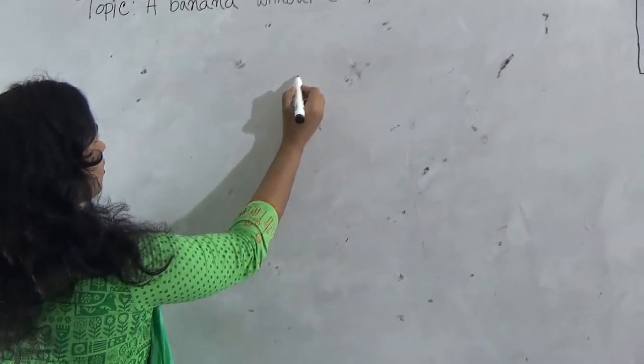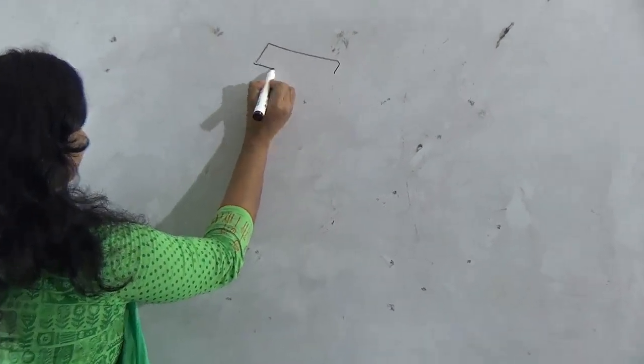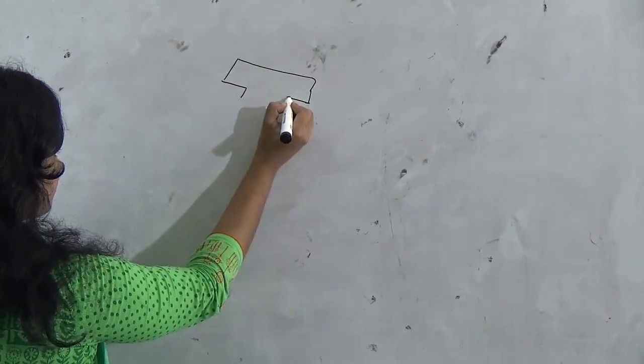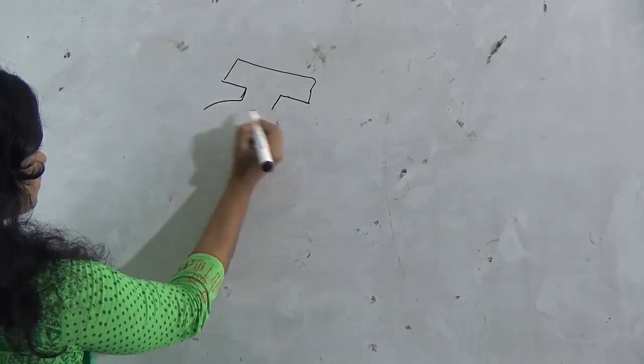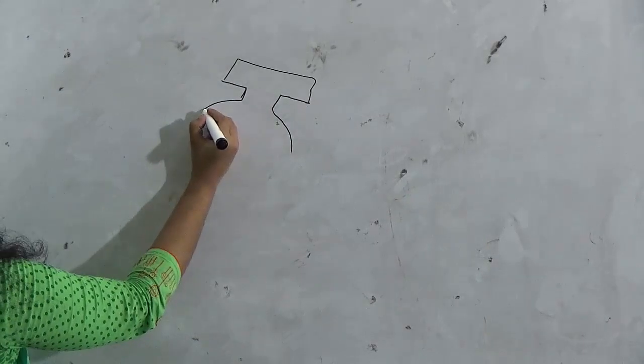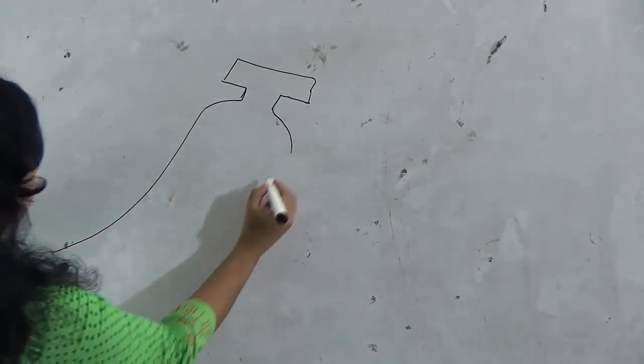First you draw this line. Okay, then give this. Then give this type of thing. Then use a curve line. Also a curve line.